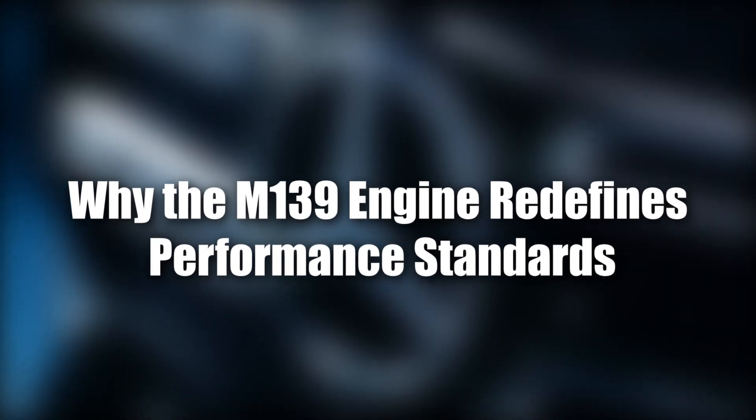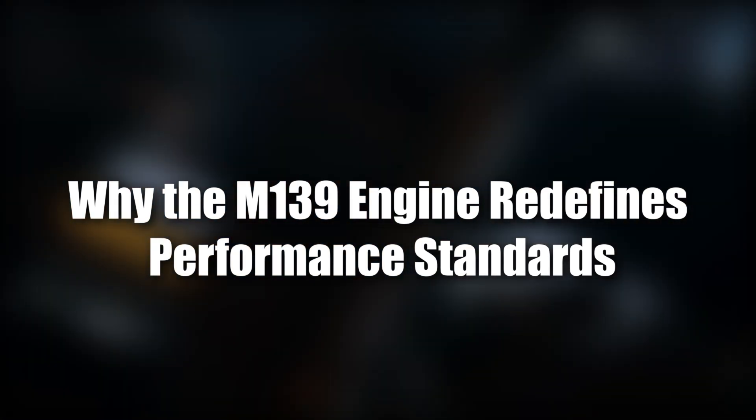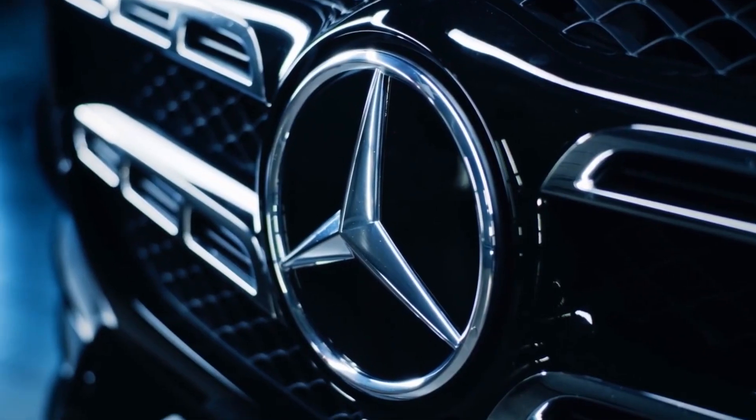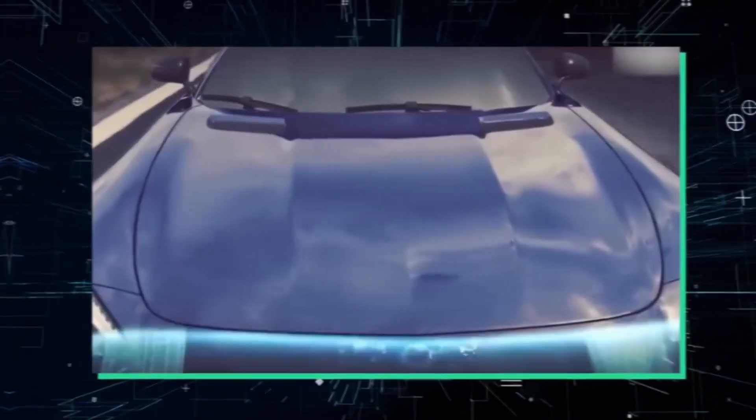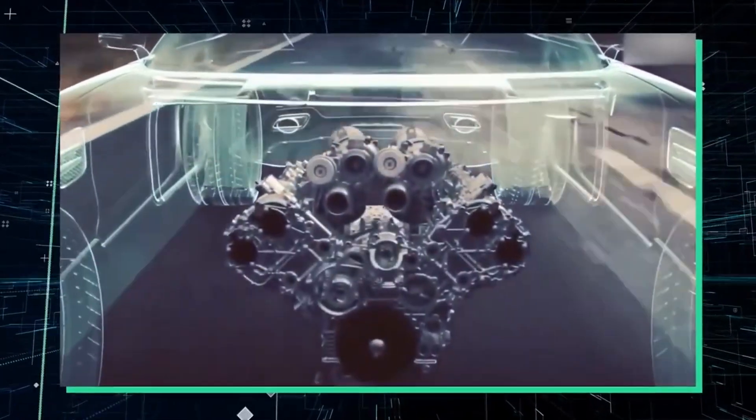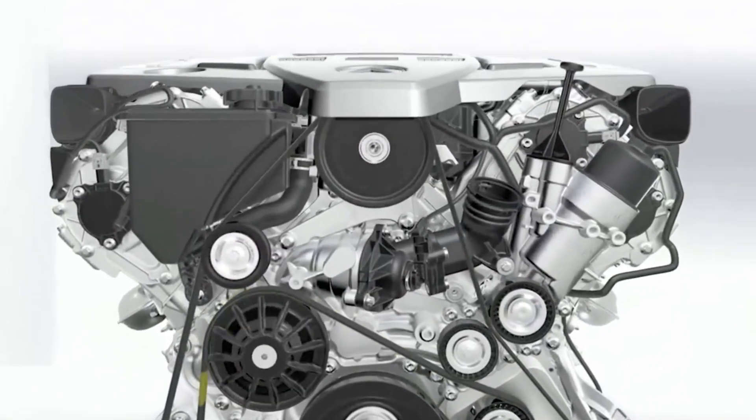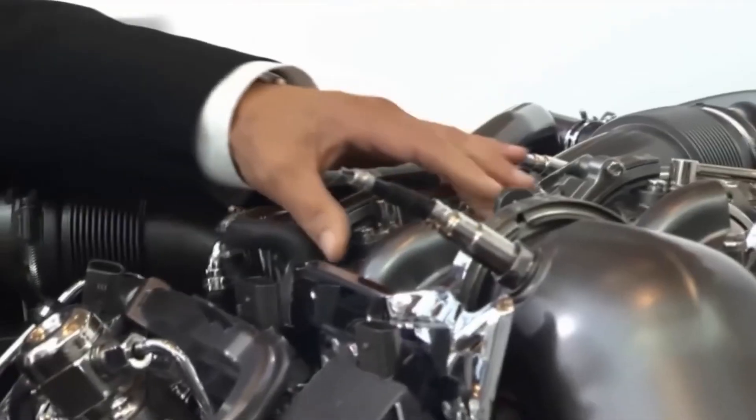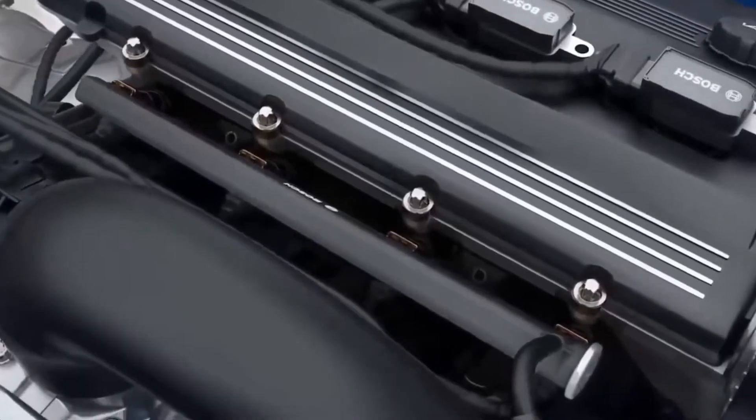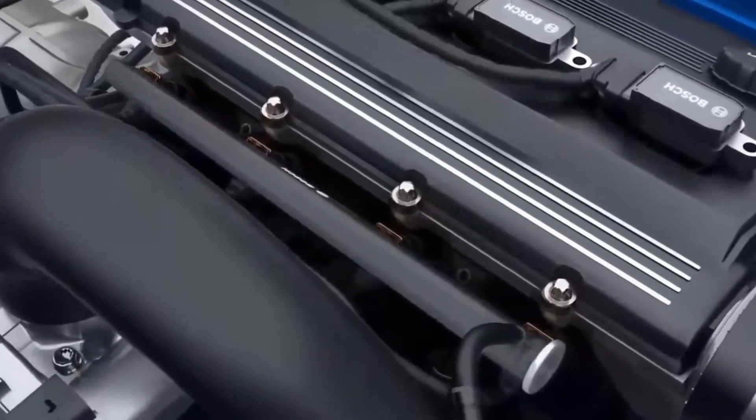The Mercedes M139 engine isn't just a technical marvel, it's a statement of what's possible in automotive engineering. By combining cutting-edge design, turbo-charging innovations, and advanced materials like Nano-slide, this engine proves that small engines can deliver massive power without sacrificing efficiency. It sets a new benchmark for four-cylinder engines worldwide, inspiring awe among enthusiasts and industry leaders alike. The M139 embodies Mercedes' relentless pursuit of perfection, making it a true pioneer in modern performance technology.